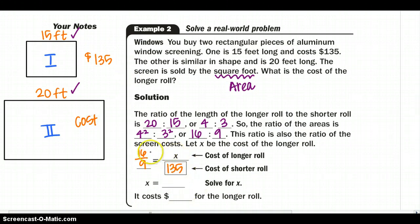This is a proportion, so you just cross-multiply and divide. I would get 9x is equal to 135 times 16, which would give me 2160. My x would be 240. So now I can say my cost of my longer roll is $240.